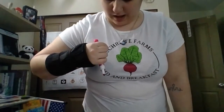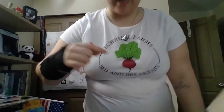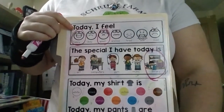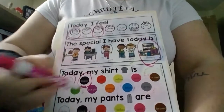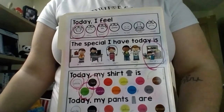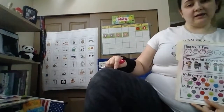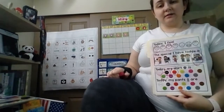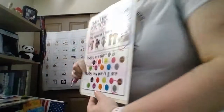Today my shirt has four colors. This is white, then I have black, and green, and red. Find white — yes, that's white. Find black — yes, that is black. Find green — yes, that's green. Find red — yes, that's red. Great job. Today my pants — what color are my pants? Today my pants are gray. Find gray — yes, that is gray. Thank you, friend.